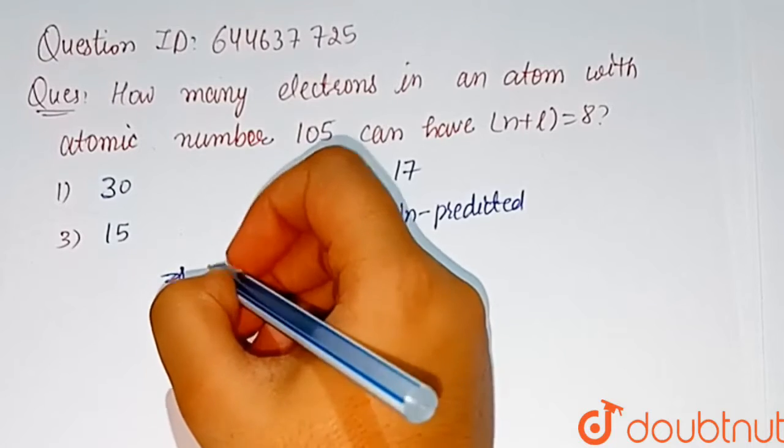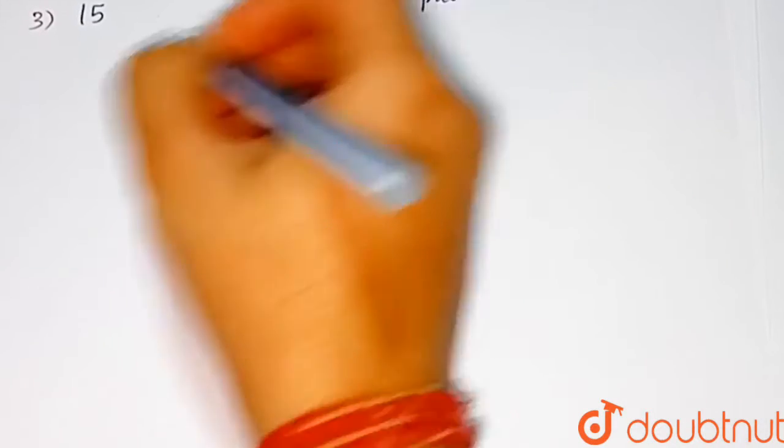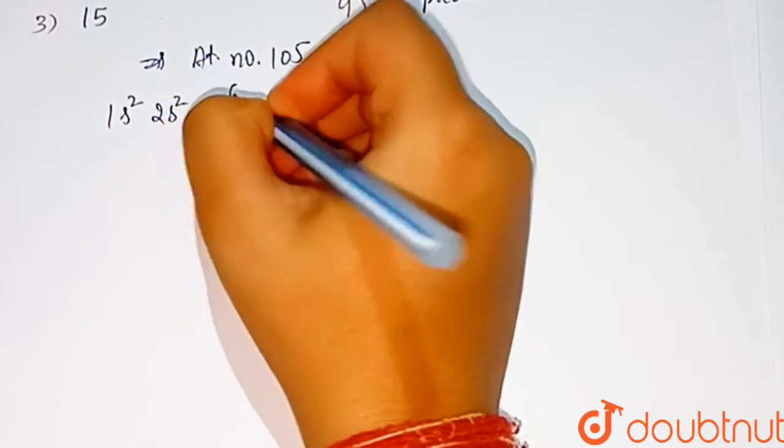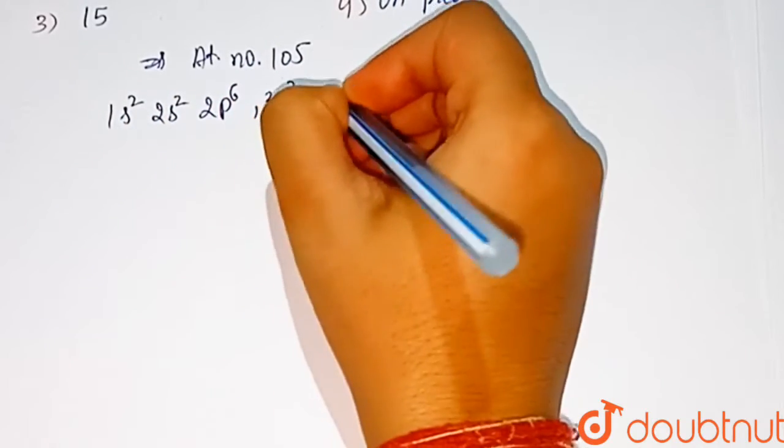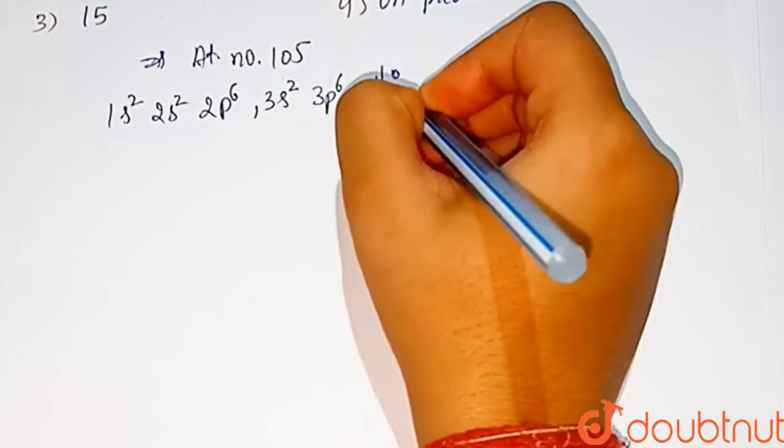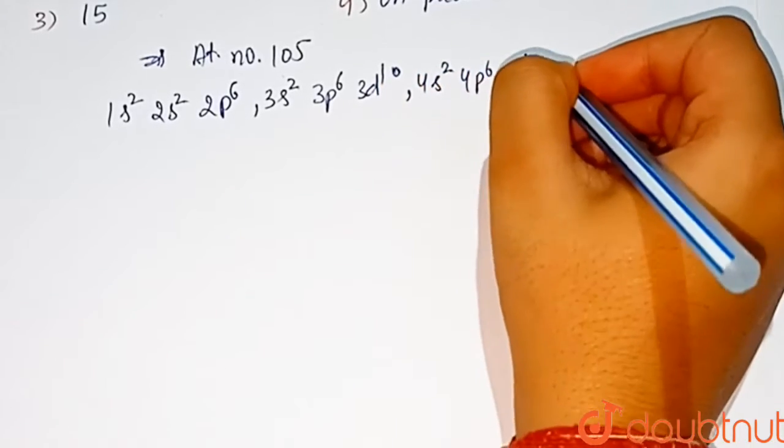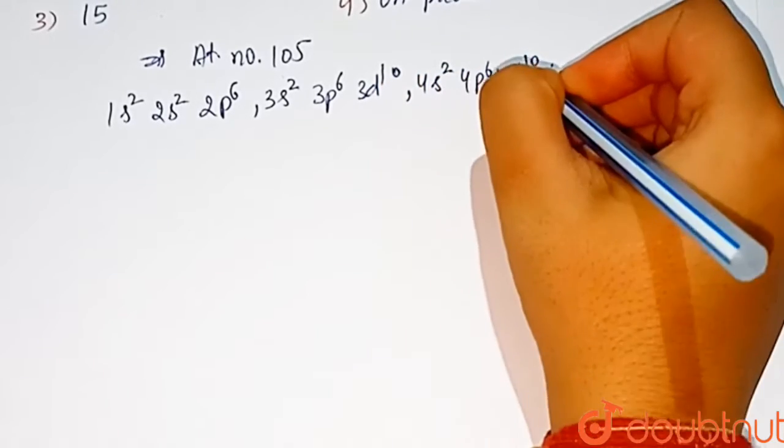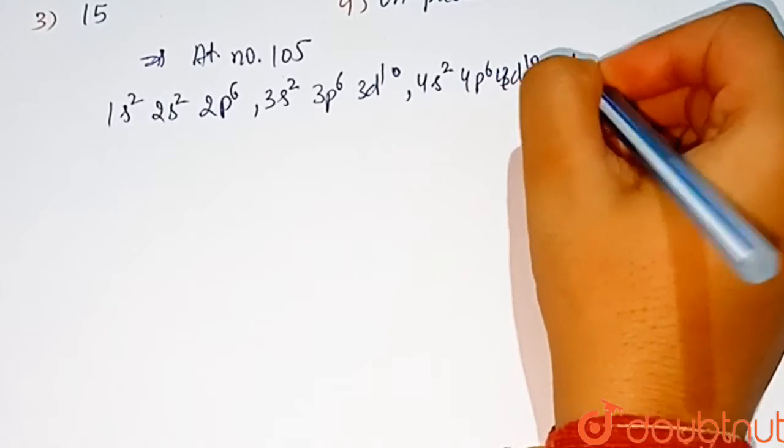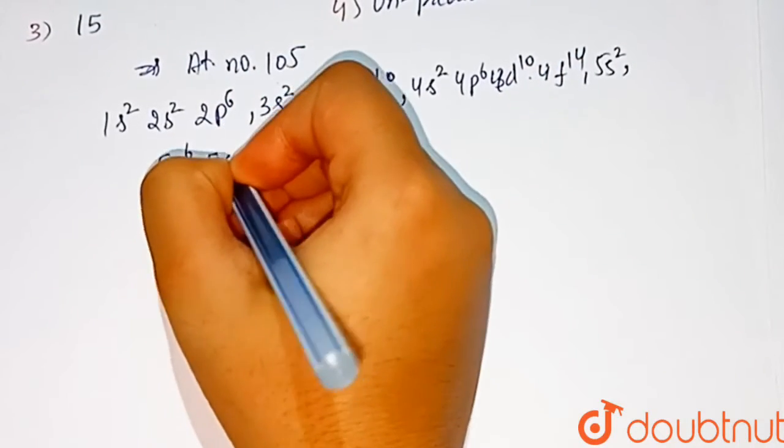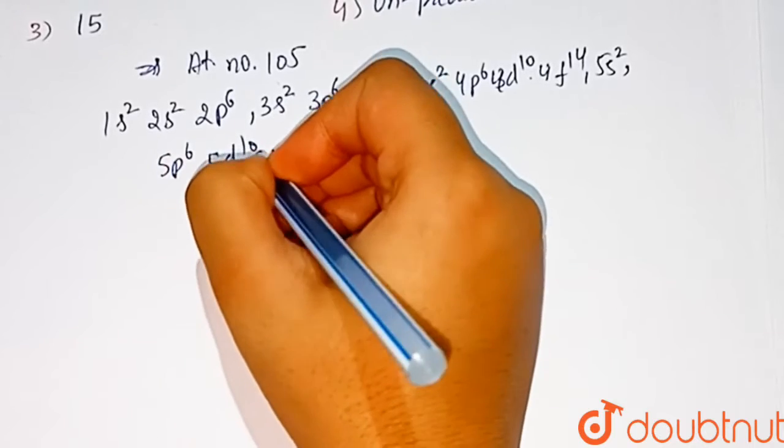1s² 2s² 2p⁶ 3s² 3p⁶ 3d¹⁰ 4s² 4p⁶ 4d¹⁰ 4f¹⁴ 5s² 5p⁶ 5d¹⁰ 5f¹⁴ 6s² 6p⁶ 6d³ 7s²